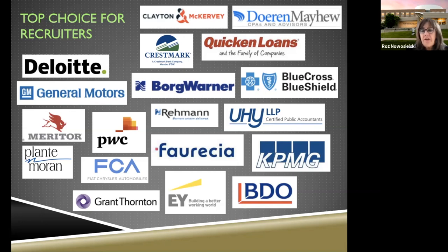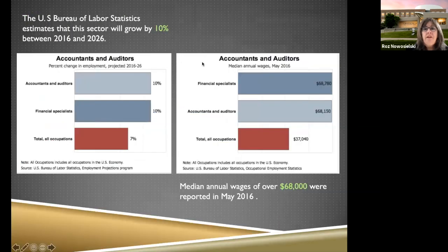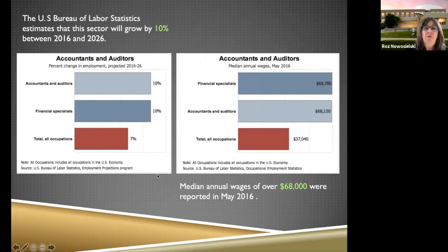Some of our corporate accounting positions are typically with Forsia, BorgWarner, Blue Cross Blue Shield, and Quicken Loans — areas where we have strong student internship relationships. As a parent, I can tell you that when your student asks what they should go into, this is an area I would point them to. When we look at Bureau of Labor Statistics data, accounting is definitely a field with growth potential and earning potential.